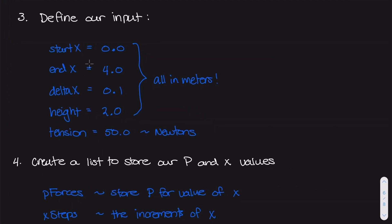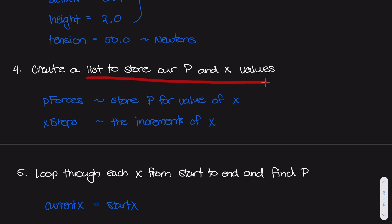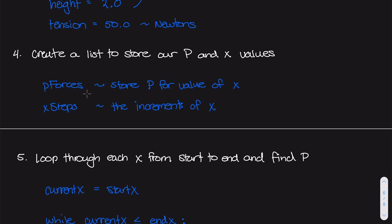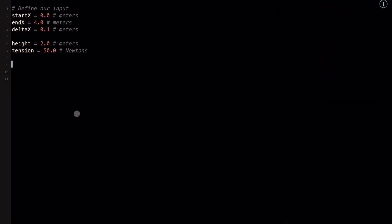The next step is to create two different lists to store our P values and our x values. We are incrementing from 0 to 4 in increments of 0.1, so we need to calculate the P force for every iteration of x and keep track of all those forces. We'll create two empty lists: p_forces and x_steps. For every P value we calculate, we'll append it to p_forces, and we'll append the x value to x_steps — in newtons and meters respectively.